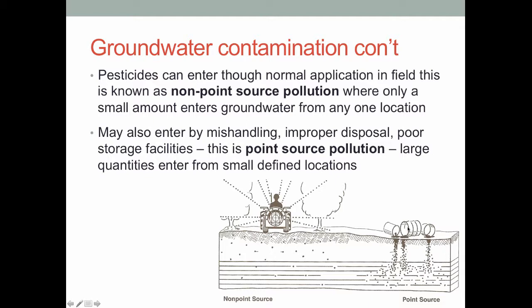Pesticides can also enter the groundwater through point source pollution — more like the direct entry discussed earlier. The idea is that at some point a chemical has been mishandled, improperly disposed of, or there are poorly regulated storage facilities where a large amount leaked into the soil, through a well, or was dumped directly into a water source in high concentrations. A point source is a large quantity at a very specific location — I can point at those barrels on the ground and say that is where the pollution happened. With a non-point source, I cannot point to a single location because it's well spread out.